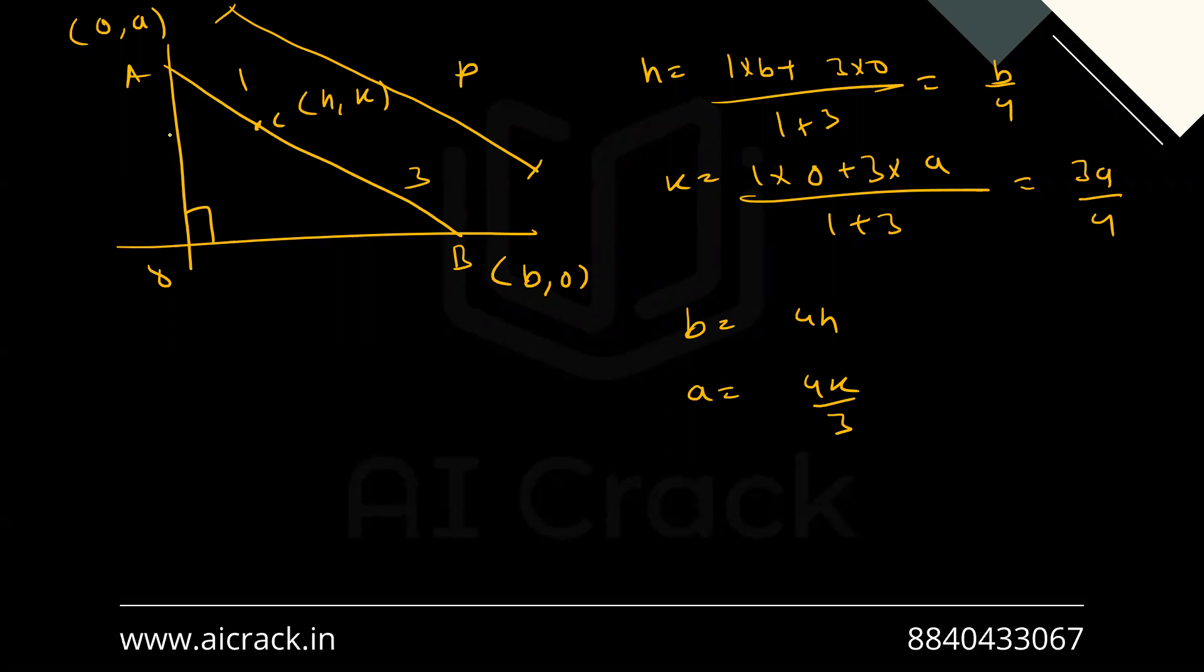So over here, AO is nothing but a coordinate a, which is four k by three. So four k by three whole square plus b, that would be four h whole square, equals to p square. So basically 16 times k square by three plus h square equals to p square.